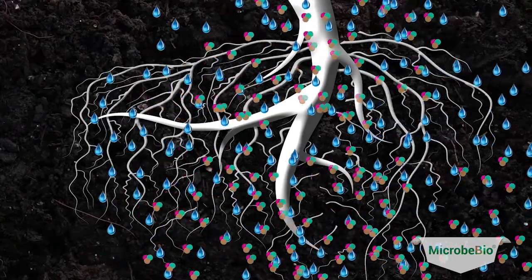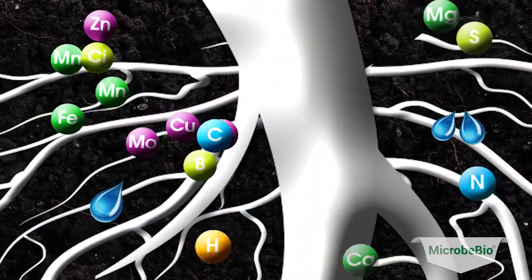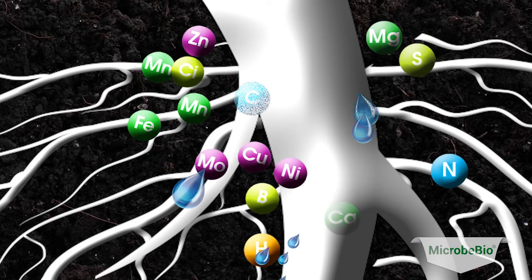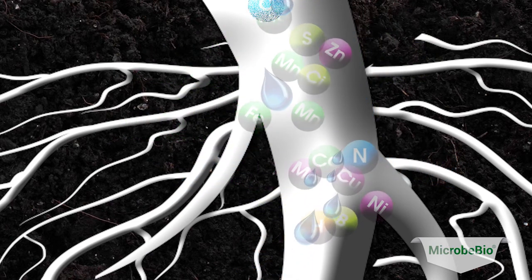This secondary root system draws in additional beneficial nutrients and water found deep within the soil, which supports the plant throughout the duration of its life cycle.